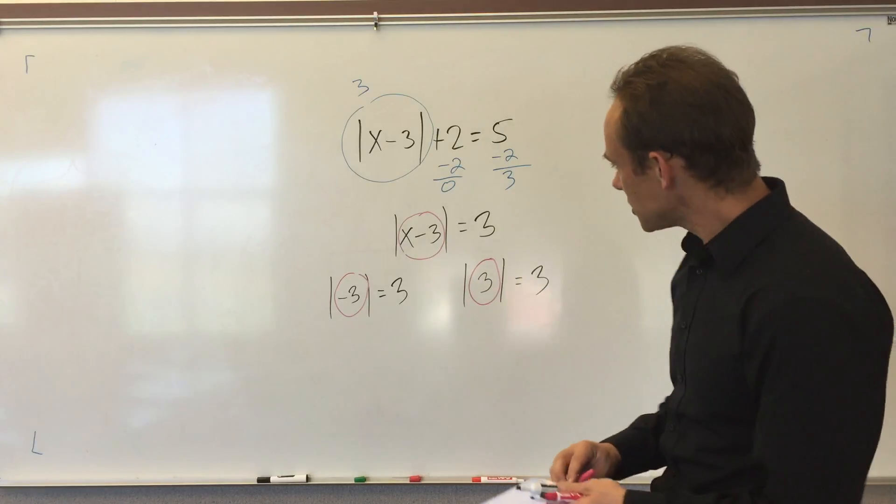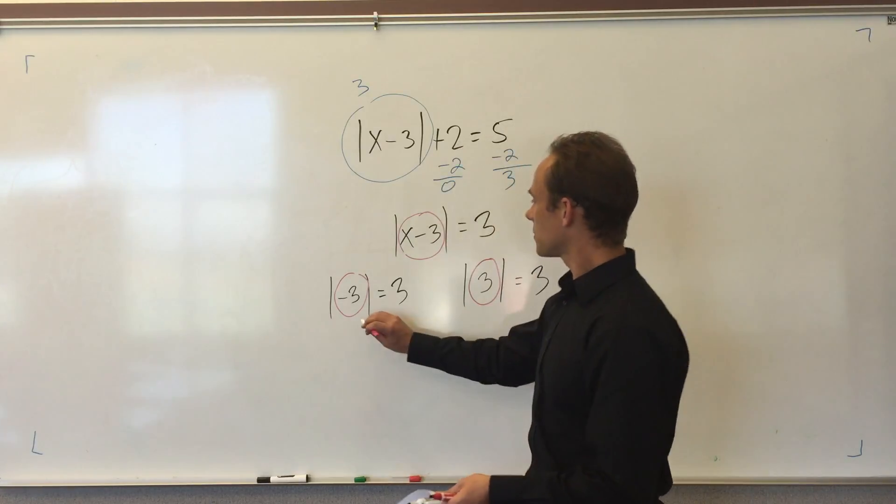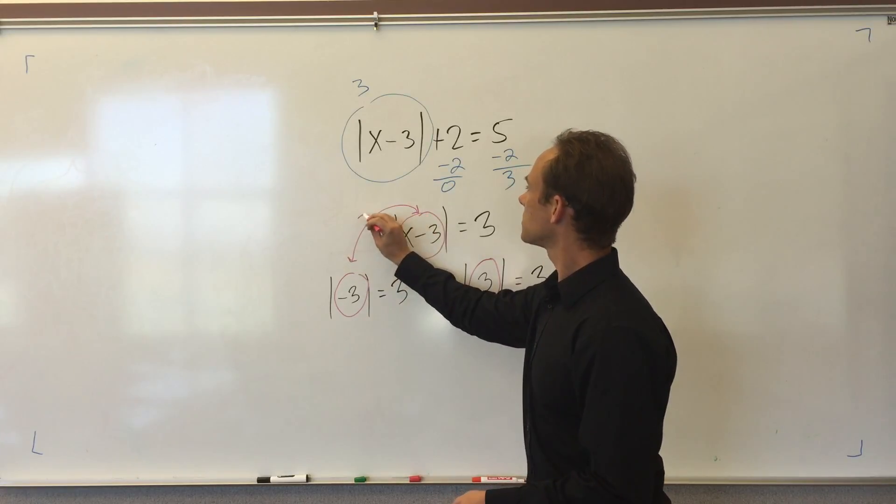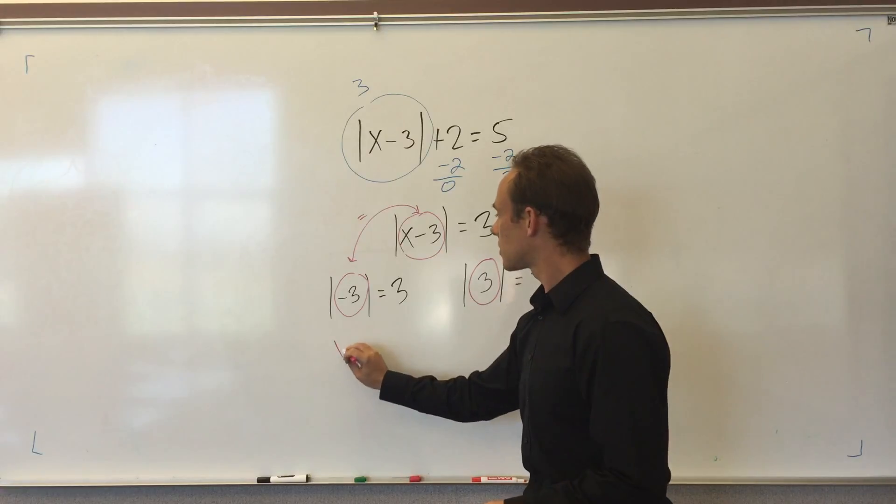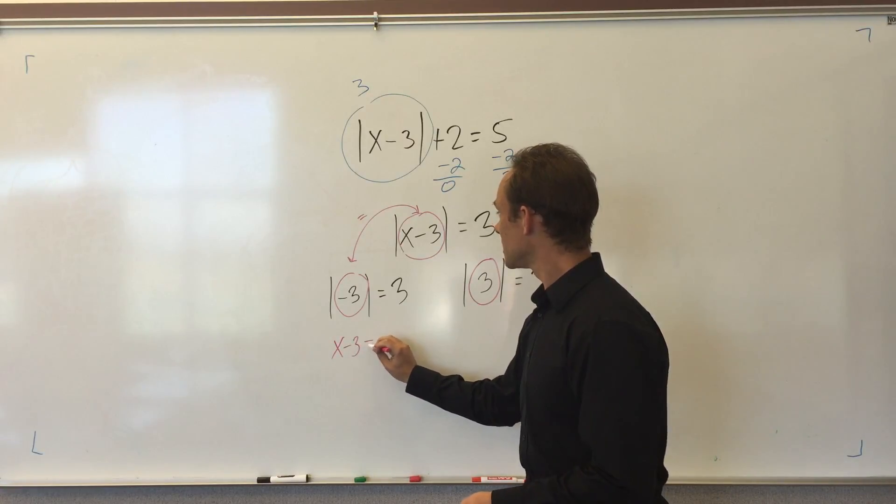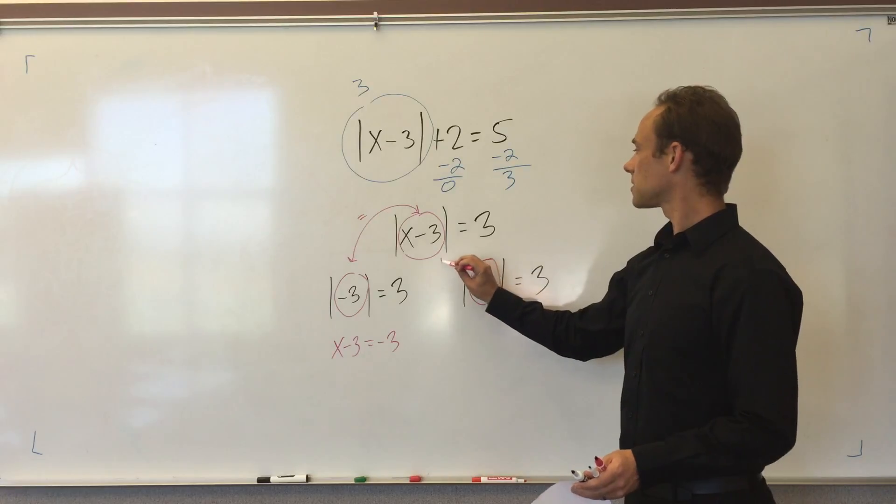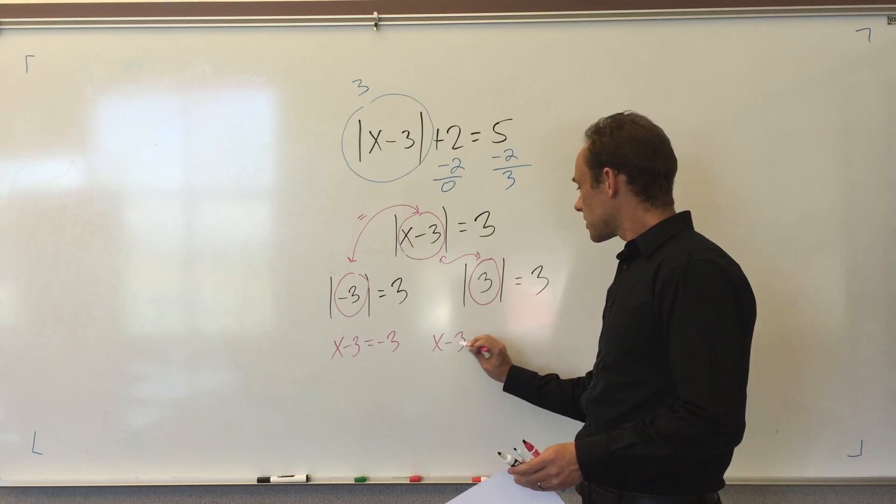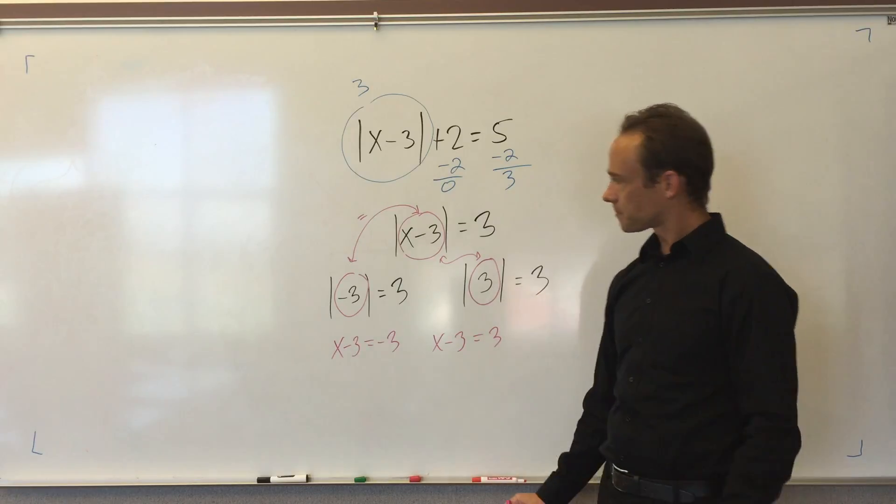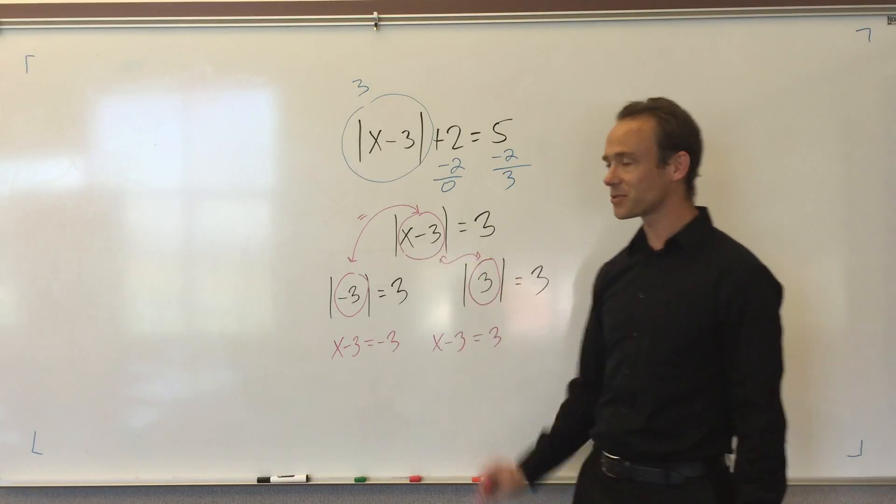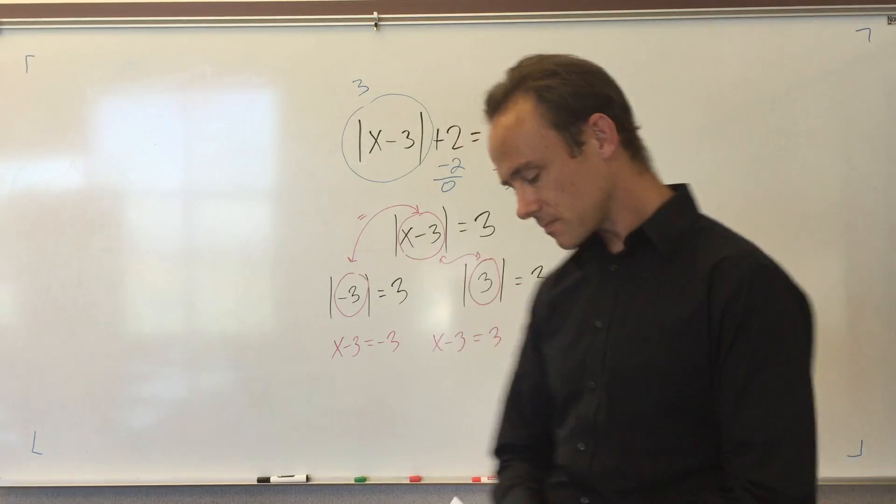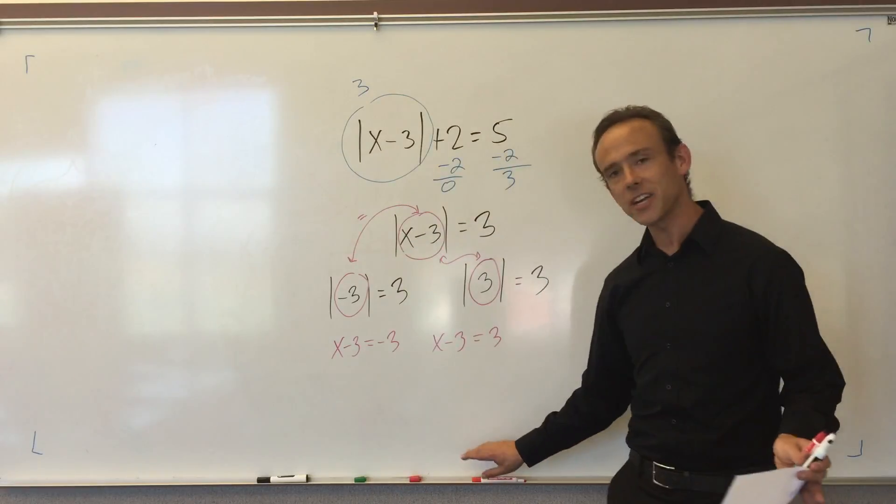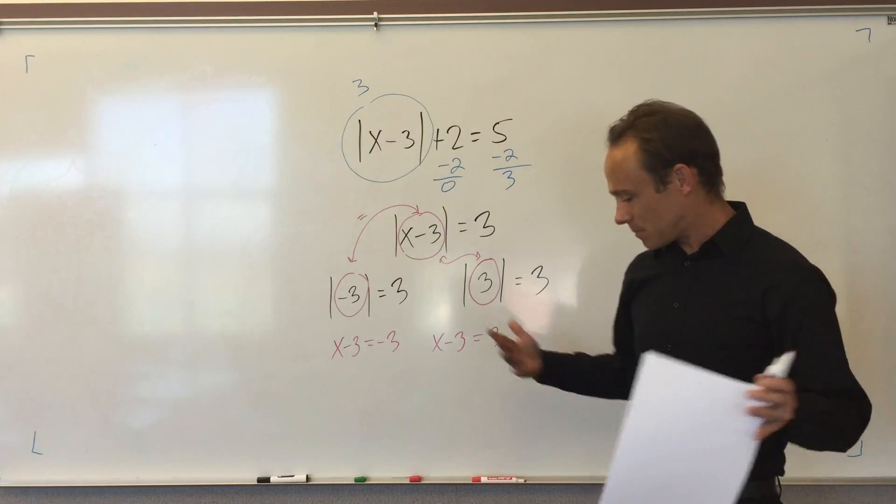Here's where we're going to write our two equations. This x minus 3 has got to be equal to negative 3, so I'll rewrite it: x minus 3 is equal to negative 3. And similarly over here, x minus 3 is equal to positive 3, because it might be positive 3 and it might be negative 3.